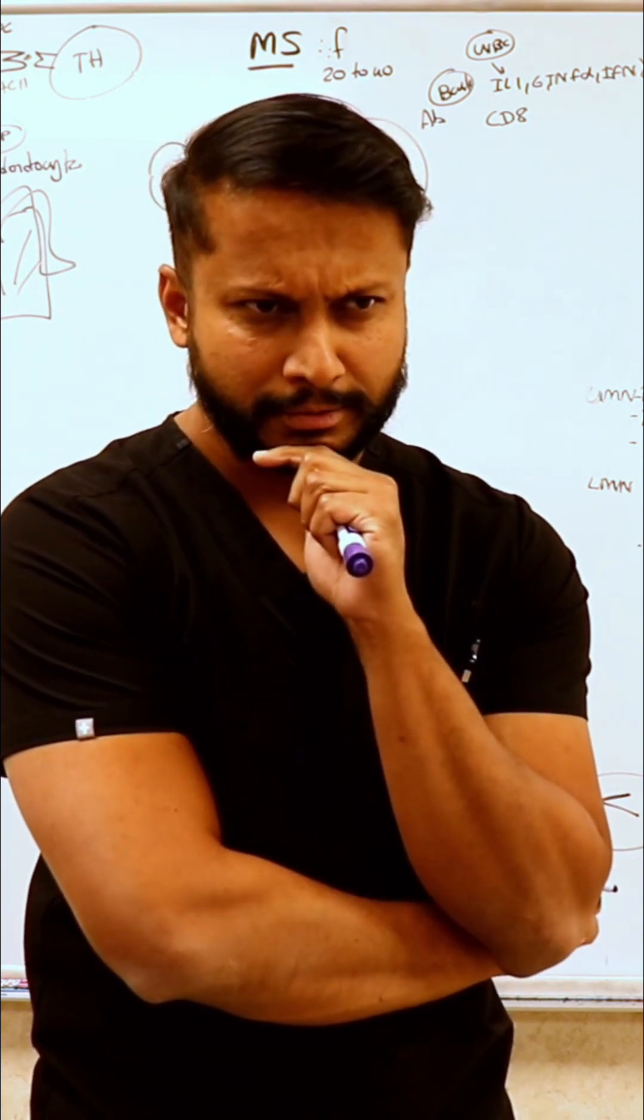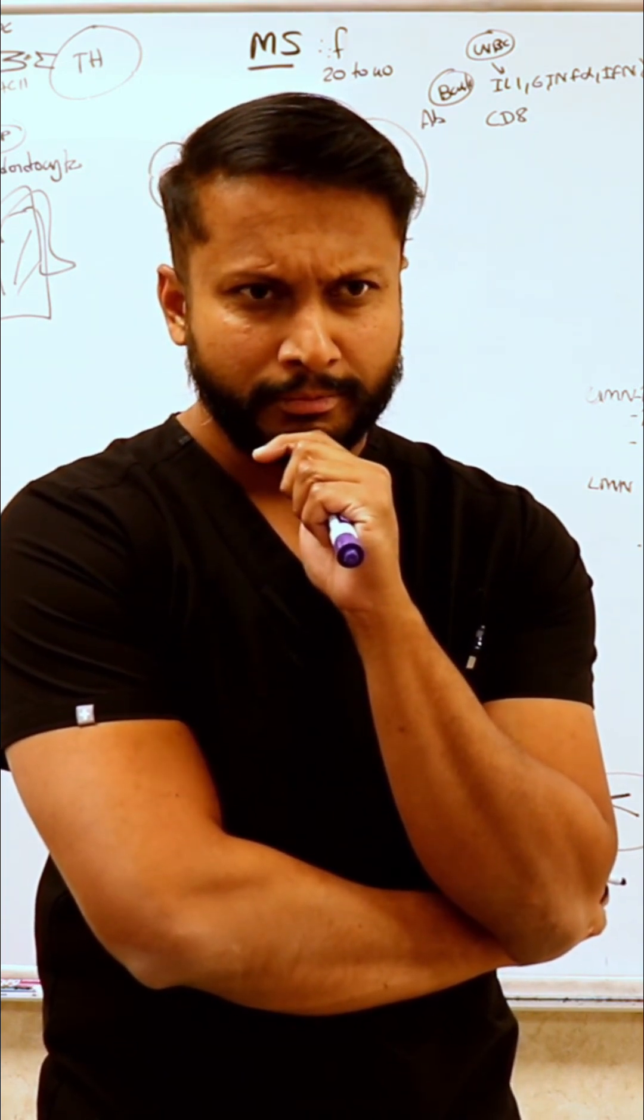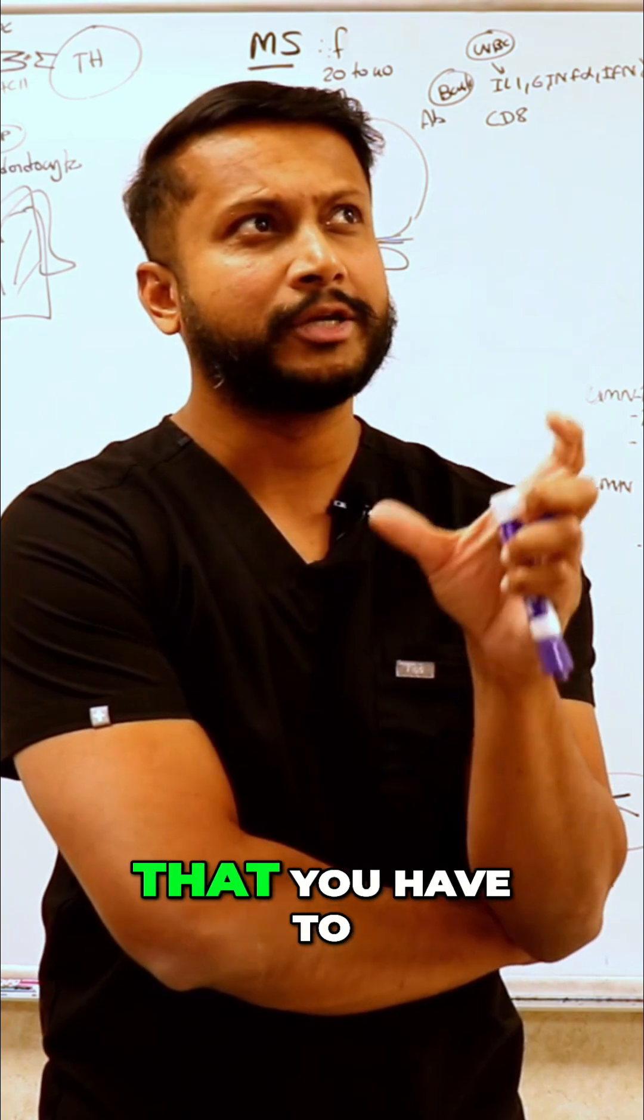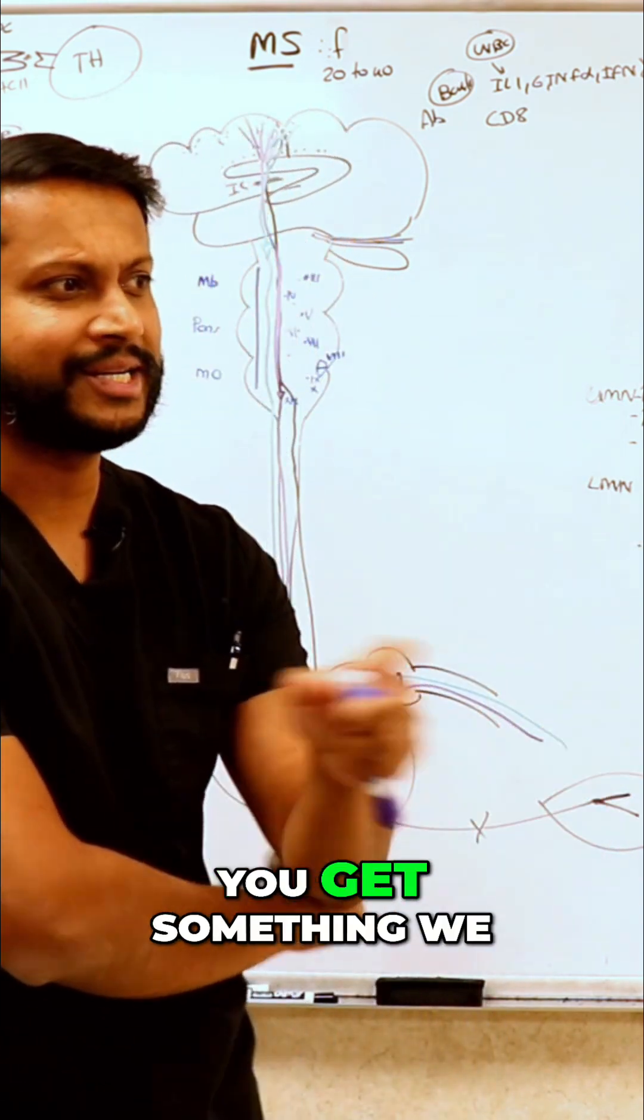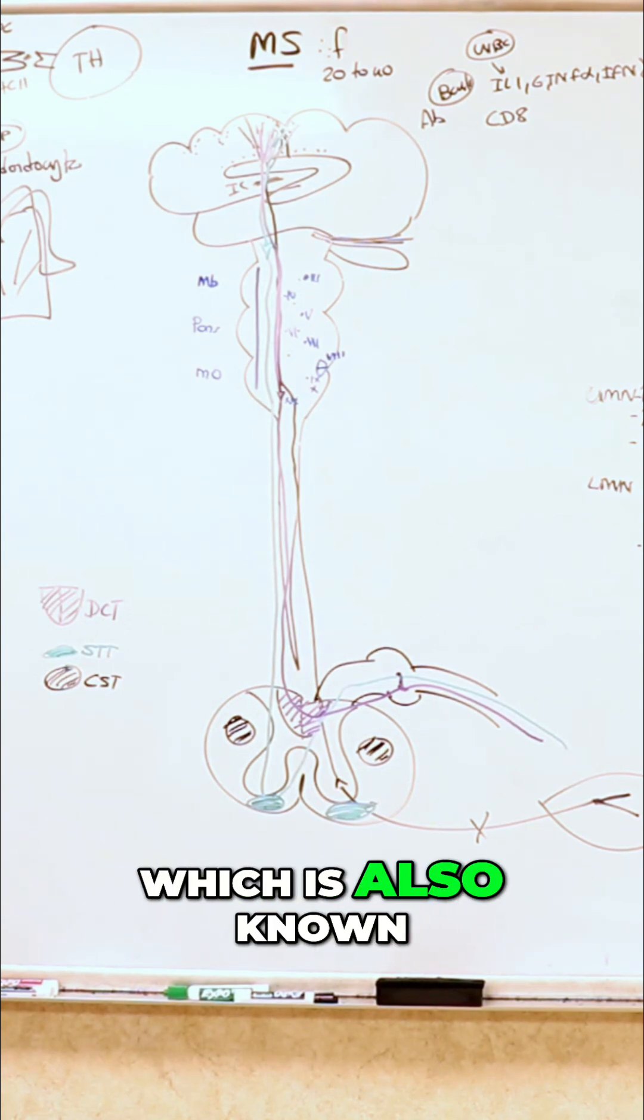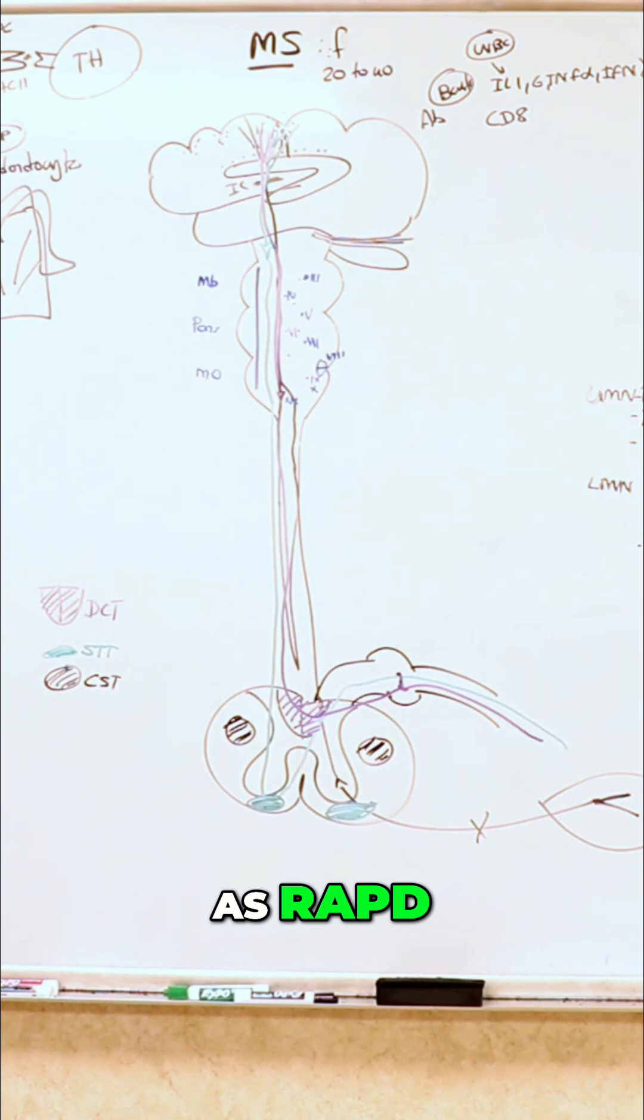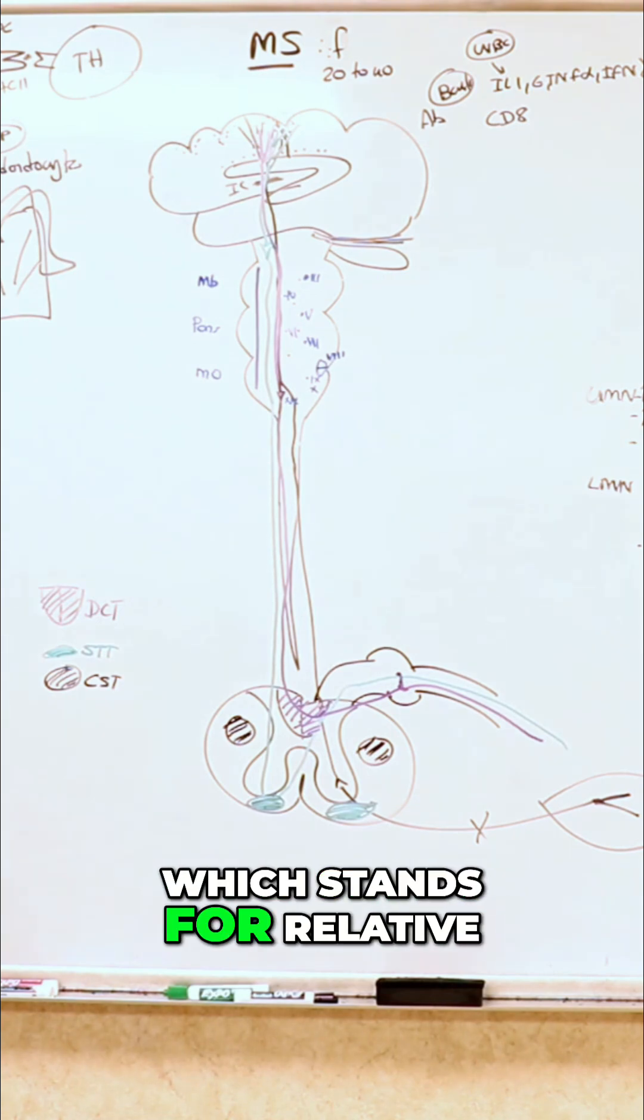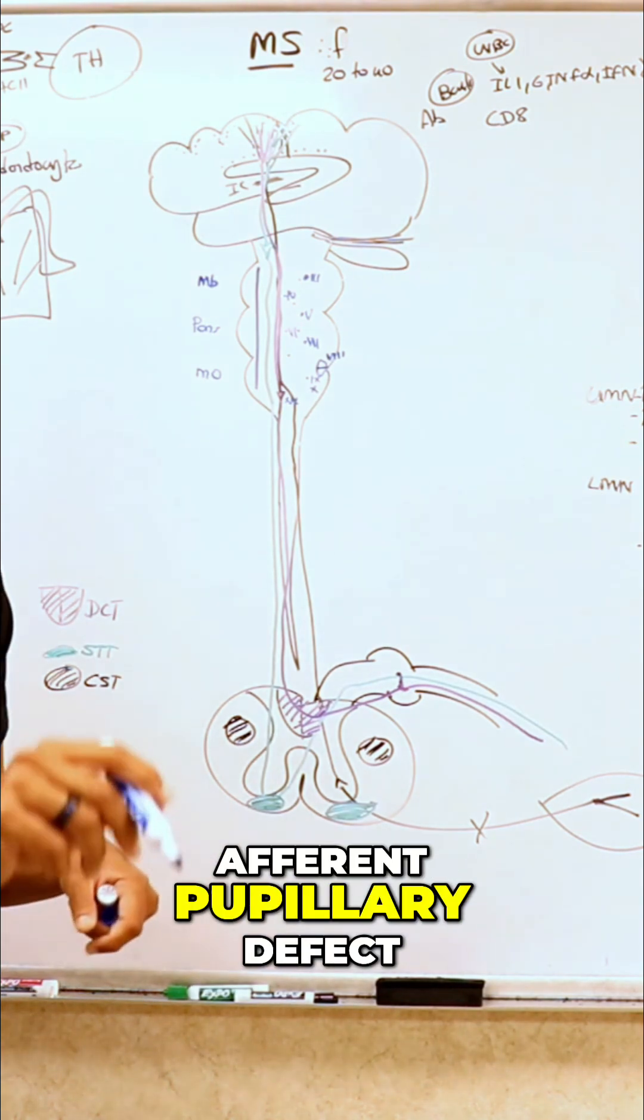So what is different in a patient with MS? What is the term that you have to know from an MS standpoint? You get something we call as a Marcus Gunn pupil, which is also known as RAPD, which stands for relative afferent pupillary defect.